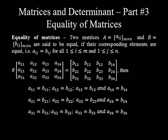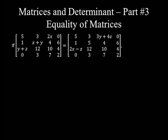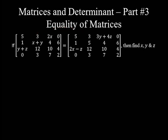Let's see this example. If this left-hand 4 by 4 matrix is equal to this right-hand side 4 by 4 matrix, find the values of X, Y, and Z. To find the values of these three variables, we need to have at least three equations. Let's use the concept of equality of matrices to form these three equations.